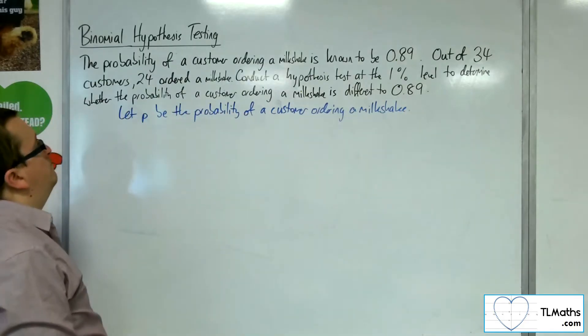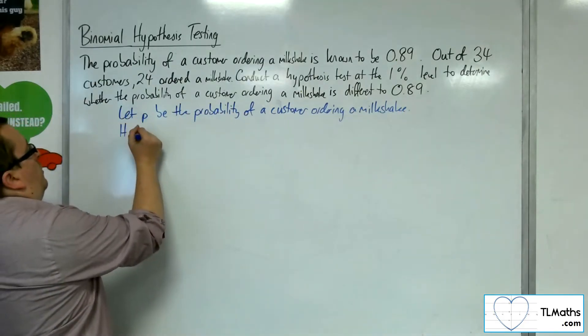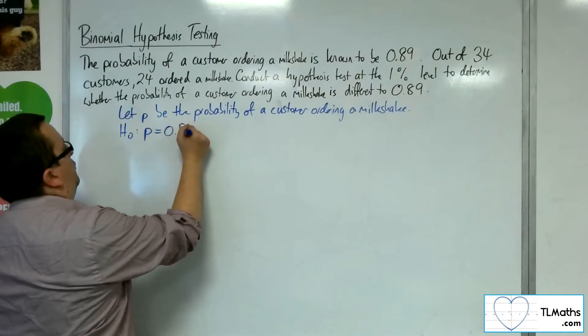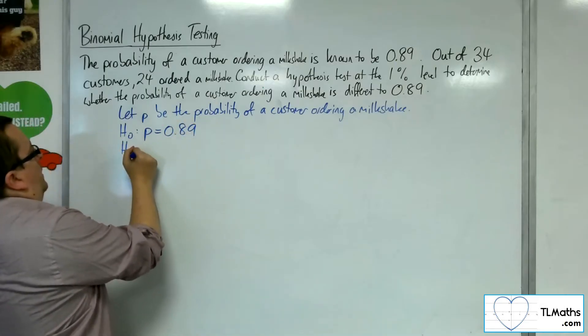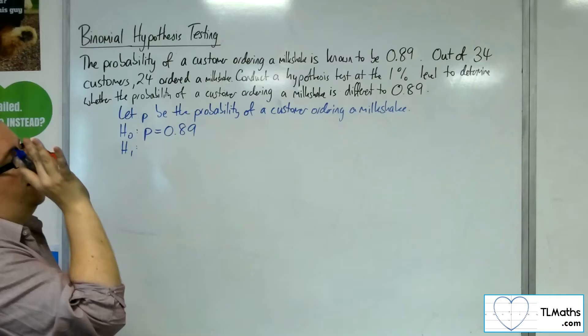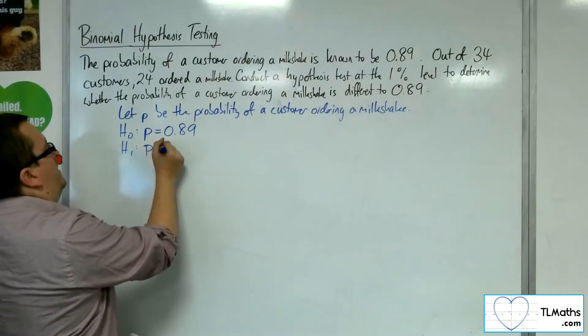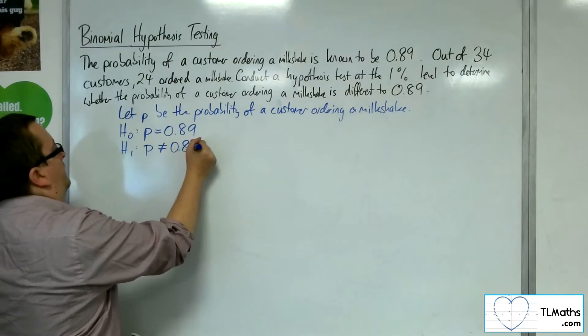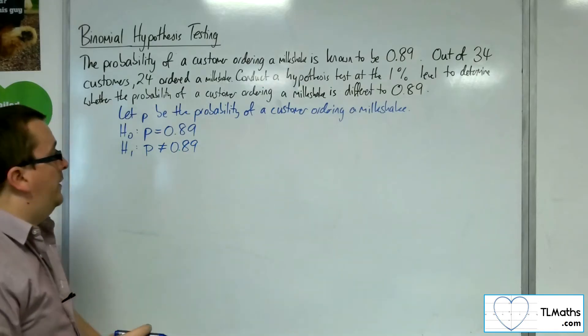H0 is the probability equals 0.89, and H1, because we're trying to determine whether it's different to 0.89, we're looking at not equal to 0.89. So it's a two-tailed test.